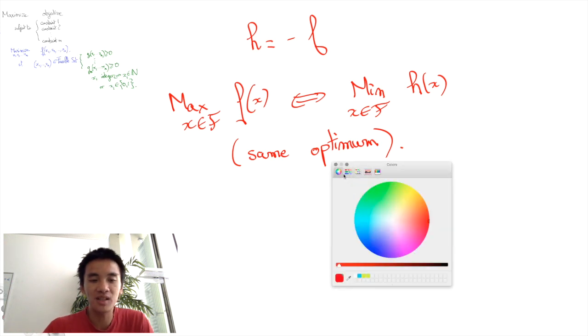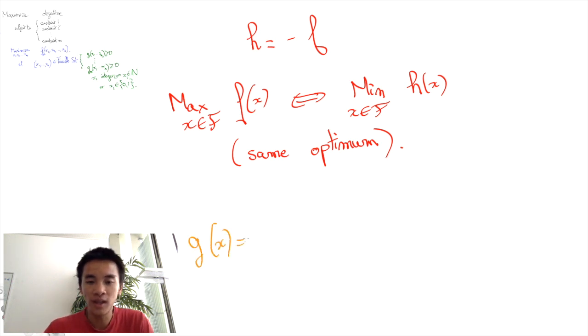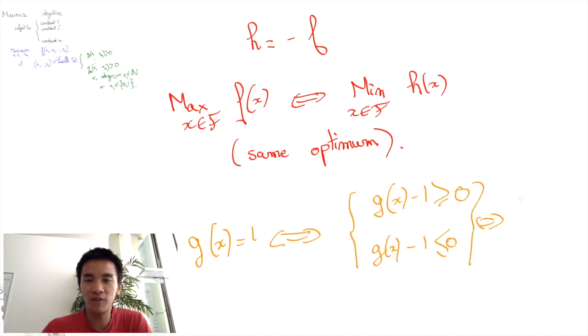Indeed, the constraint g of x equals to 1 is equivalent to satisfying both constraints g of x minus 1 greater or equal to 0 and minus g of x plus 1 greater or equal to 0.